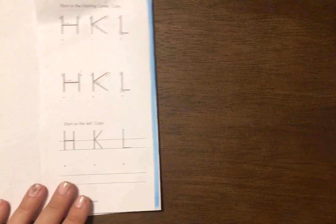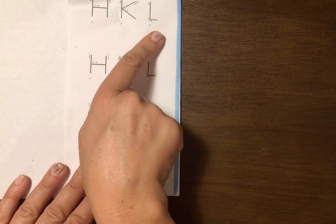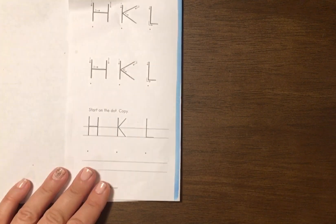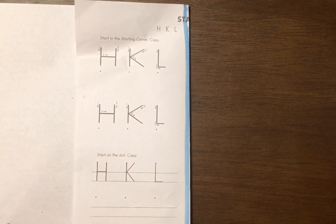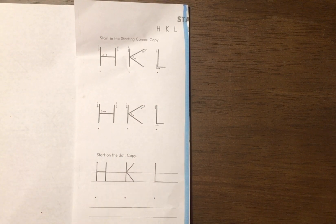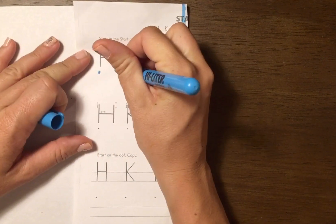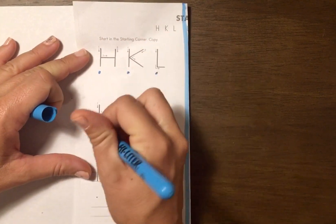Okay, the first letters we're going to do are H, K, L. These are starting corner capitals, so they're going to start in the top left corner. We're going to have to pick up our pencil for H and K, and for L, easy peasy, it just drags.